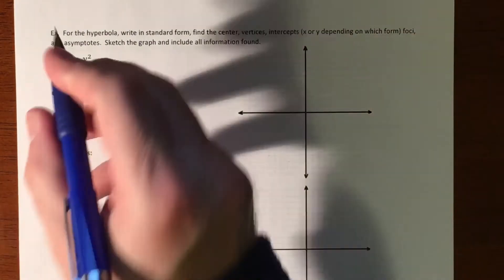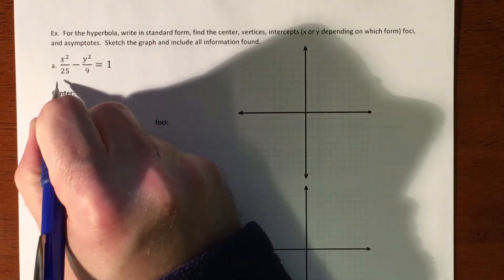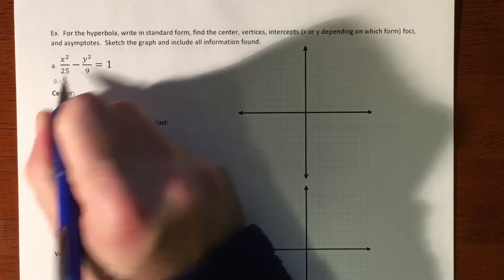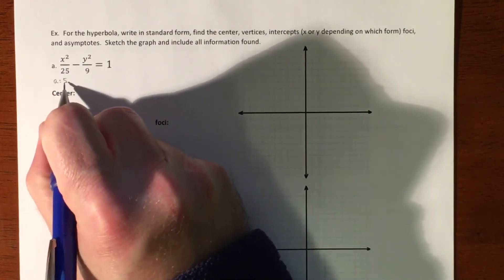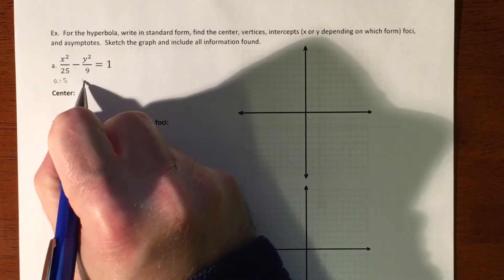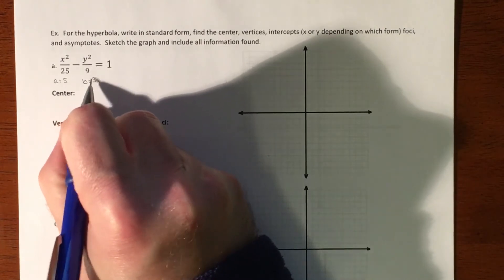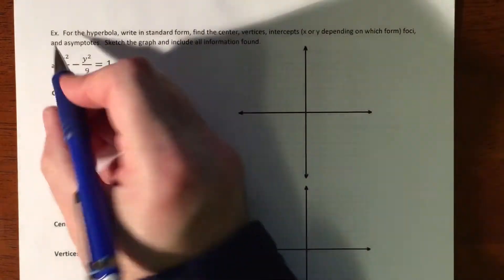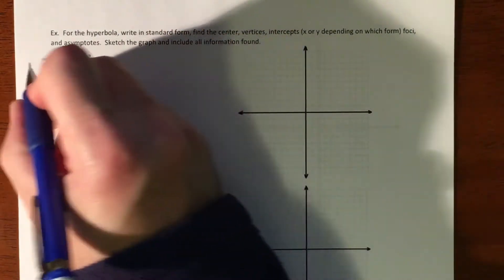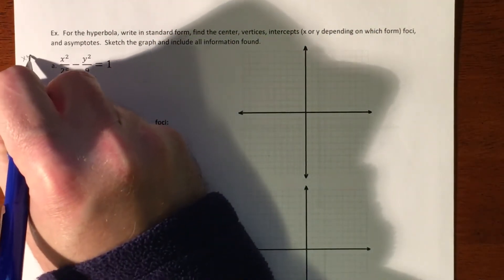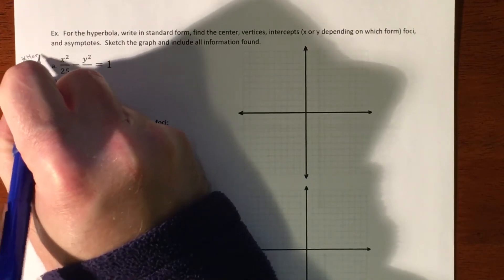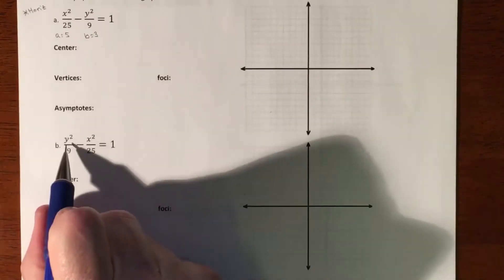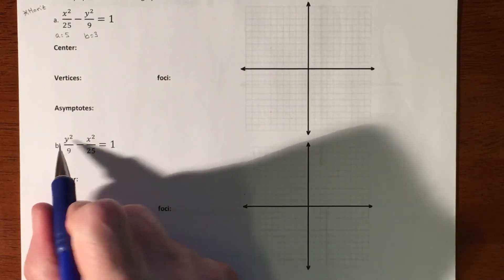This is your a value, or this is your a squared value, so that means your a value is going to be 5, because this is a squared. So that's going to be your left and right from the center. Your b value is going to be 3. That is your up and down from it. So also this graph is horizontal. The reason that it's horizontal is because it's x squared minus y squared versus the second one is going to be y squared minus x squared, so this one's going to be vertical.